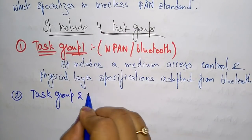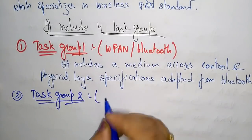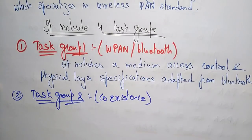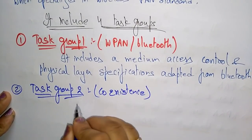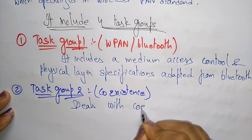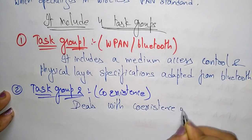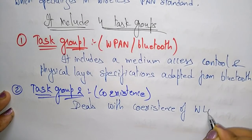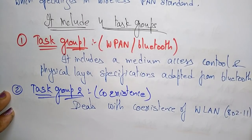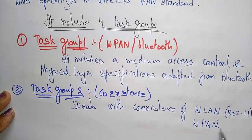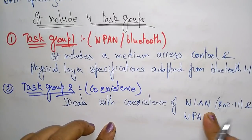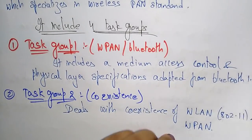Task Group 2 deals with coexistence. Specifically, it deals with the coexistence of wireless LAN (IEEE 802.11) and wireless PAN. Task Group 2 ensures that wireless LAN and wireless PAN can operate together without interference.